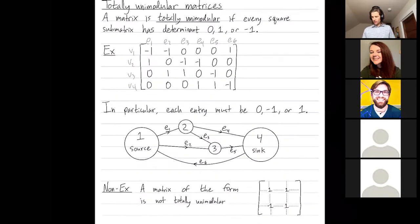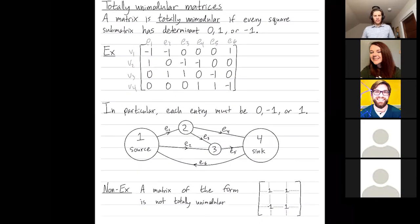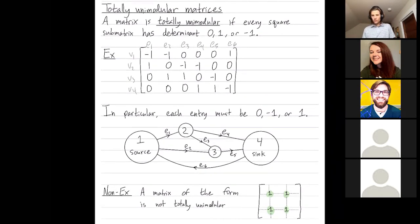Let's do a non-example. If you ever have four entries that look like this, a 1, a 1, a negative 1, and a 1 on the same two columns or the same two rows, then this matrix is certainly not totally unimodular because here's a square 2 by 2 matrix whose determinant is 1 minus negative 1 or 2. So this is some sort of configuration that you have to avoid, even if all of your entries are zeros and ones and negative ones.